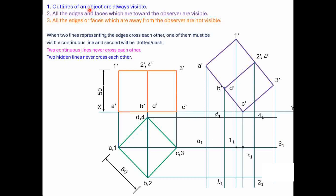The very first rule — outline of any view is always visible, meaning the outer boundary is always visible. We identify the points of the outer boundary. Starting from A1 going anticlockwise, the outer boundary is: A to B, B to 2, 2 to 3, 3 to 4, 4 to D, D to 1. This is the outline of the object, so it is always visible and represented with a continuous dark line. This is the application of Rule number 1.